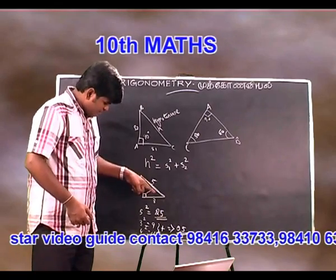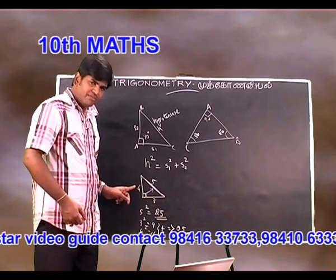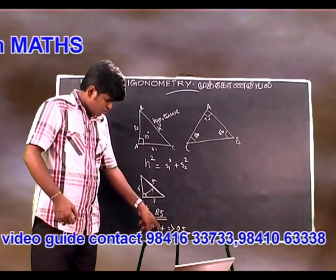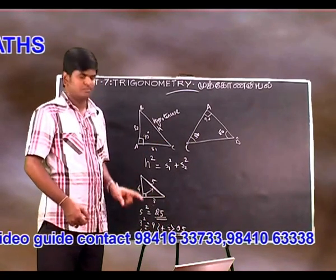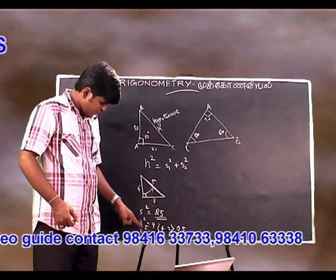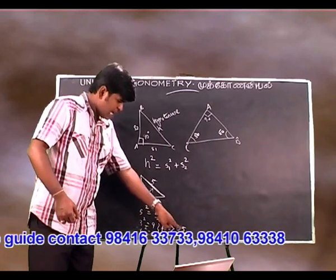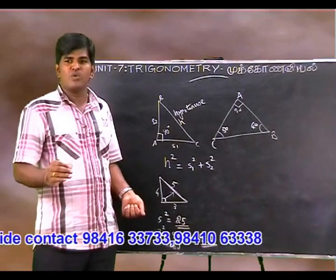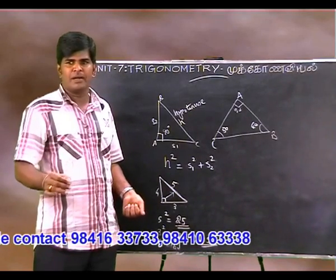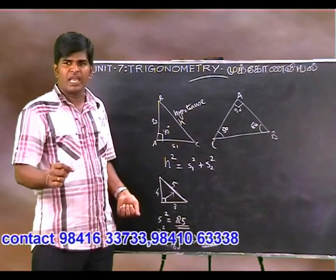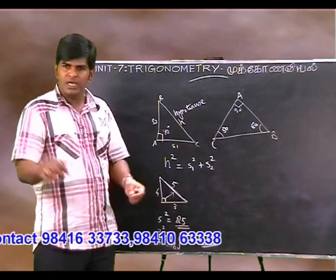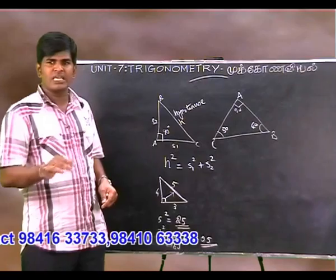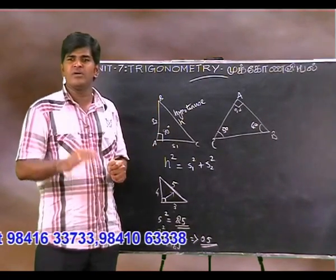This is the Pythagorean theorem. The Pythagorean theorem says that the square of the two sides added together equals the square of the hypotenuse. This property is the key property of trigonometry. Let's go.